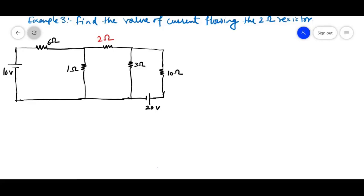Now, dear student, we are going to see a third example based on mesh analysis. Find the value of current going through 2 ohm resistor.